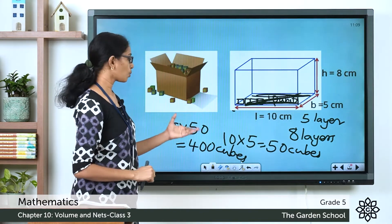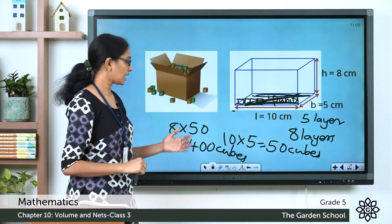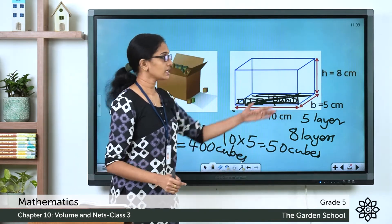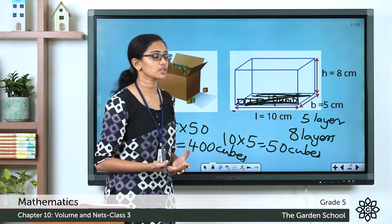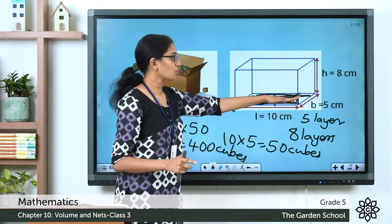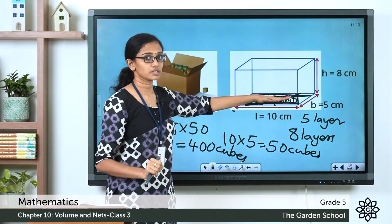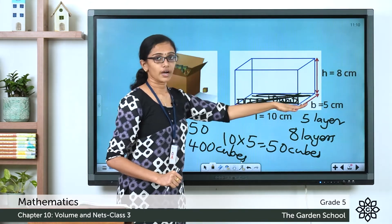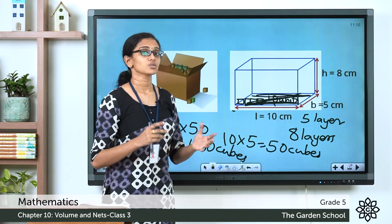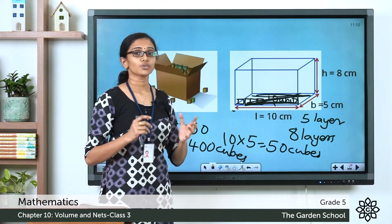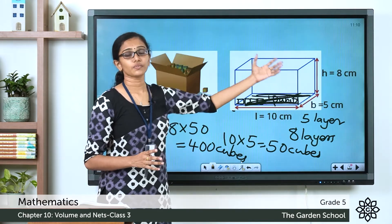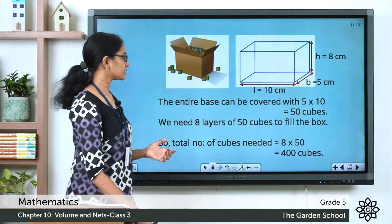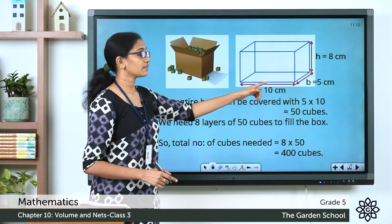What is the volume of 1 cube? One cubic unit. Hence 400 cubes will be 400 into 1, which is 400 cubic units — the volume of this box. So what did we actually do? We multiplied the length and the breadth to know how many cubes are at the base, then multiplied that by the height. So 10 into 5 is 50, and 50 into 8 gives 400. We multiplied length, breadth, and height to find how many cubes fill the box, and hence found the volume.